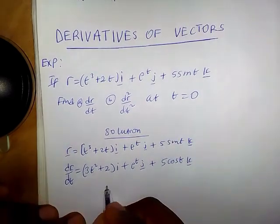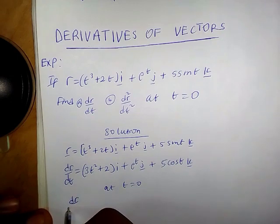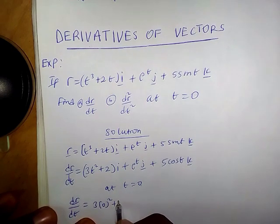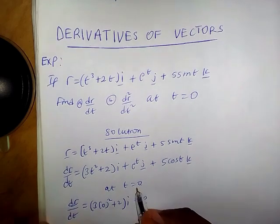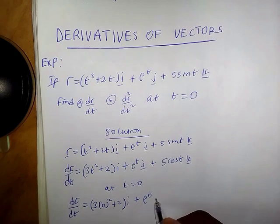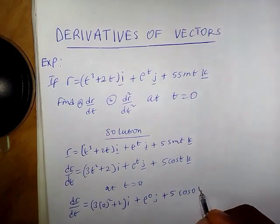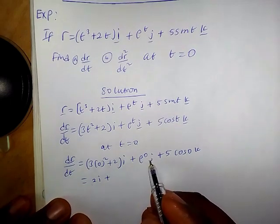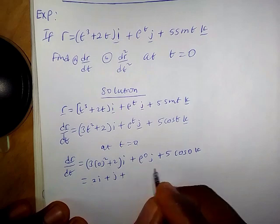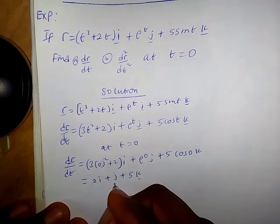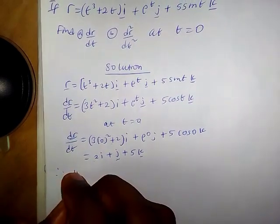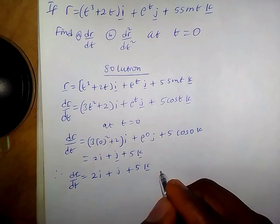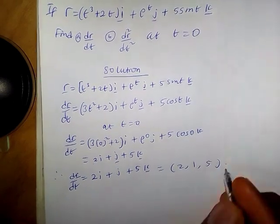We evaluate dr/dt at t equals 0. So at t equals 0 we plug in 0 in place of t: we have (3·0² + 2)i plus e^0 j plus 5cos(0)k. The exponential of 0 is 1, so we have j, and cos(0) is simply 1, so we have 5k. Therefore dr/dt at t=0 is simply 2i + j + 5k, which can also be written as (2, 1, 5).